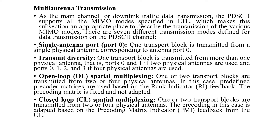There are seven different transmission modes defined for data transmission in the PDSCH physical downlink shared channel for LTE. The first is single antenna port, which we call port 0: one transport block is transmitted from a single physical antenna corresponding to antenna port 0. The second is transmit diversity: one transport block is transmitted from more than one physical antenna — port 0 and 1 if two physical antennas are used, and ports 0, 1, 2, and 3 if four physical antennas are used.